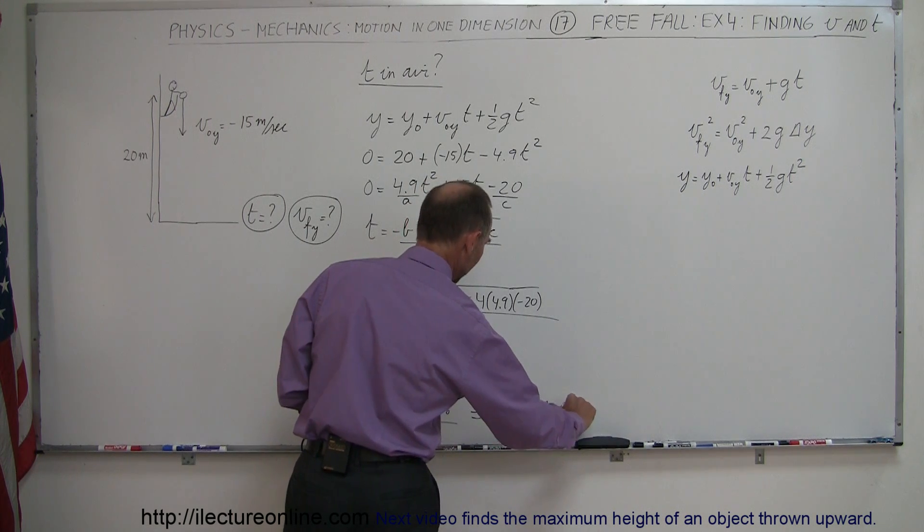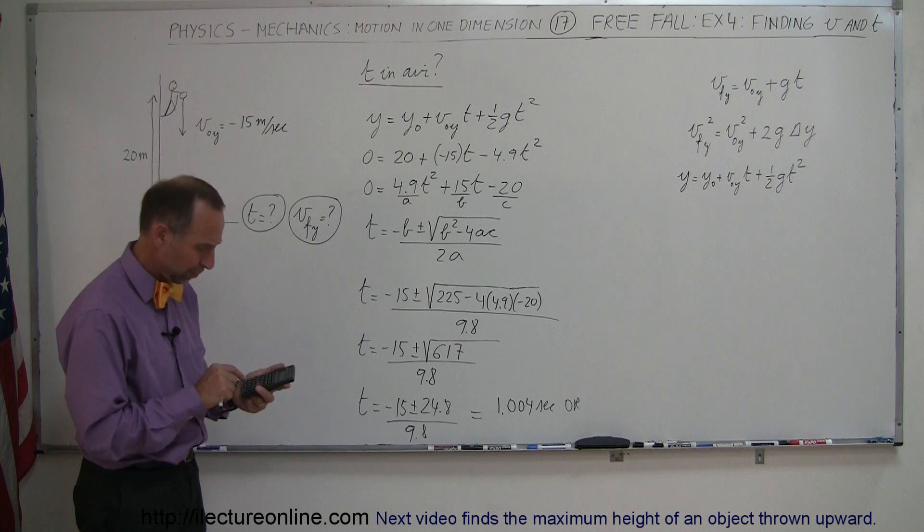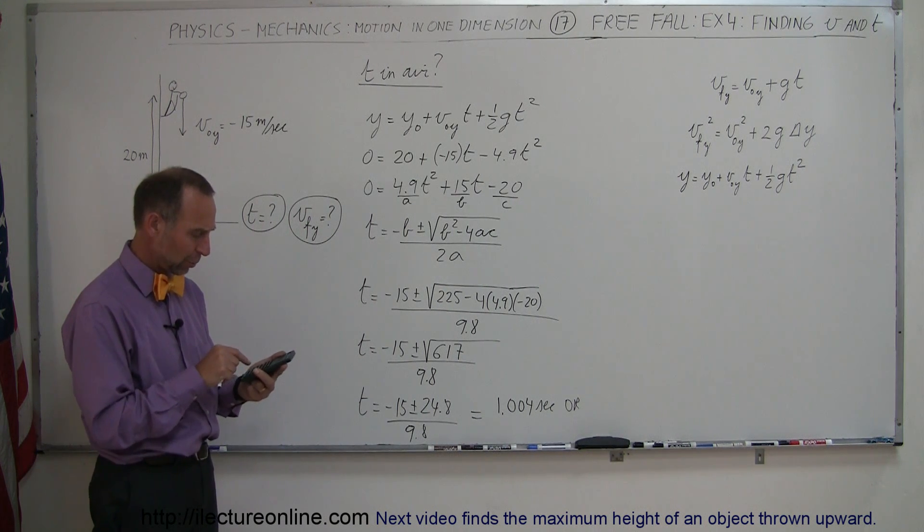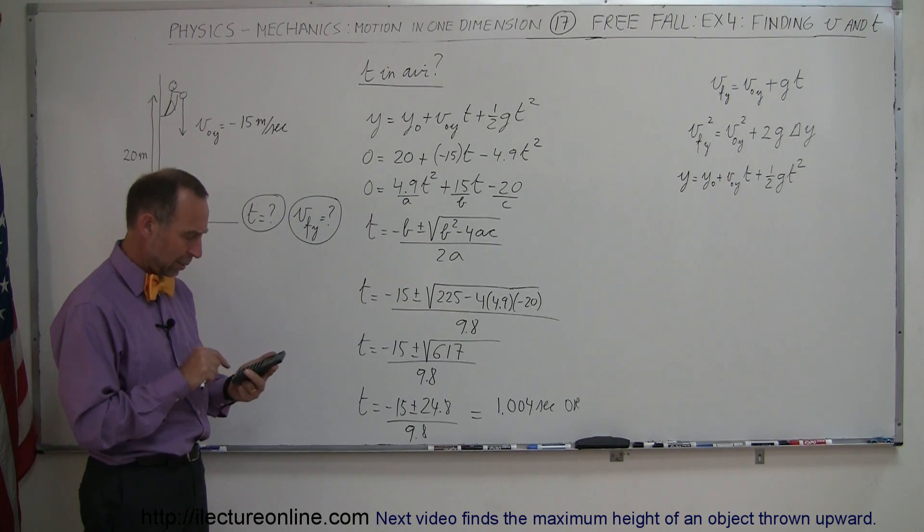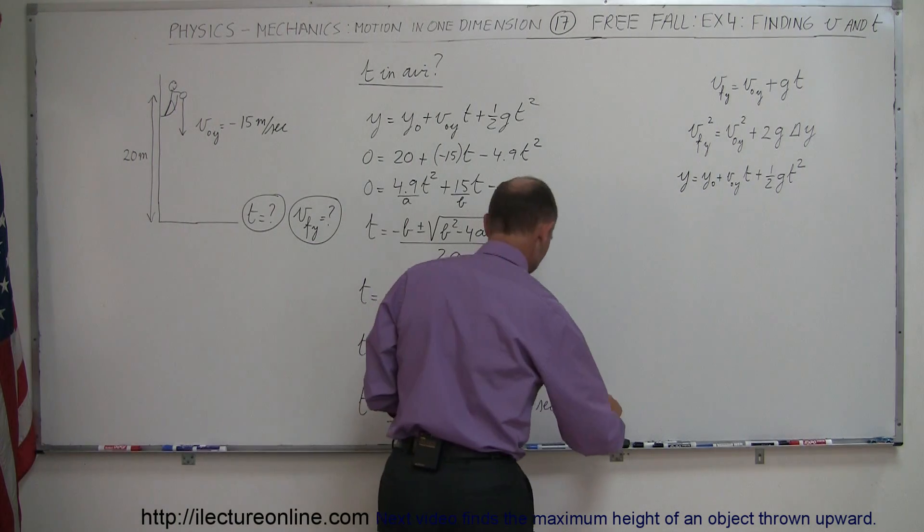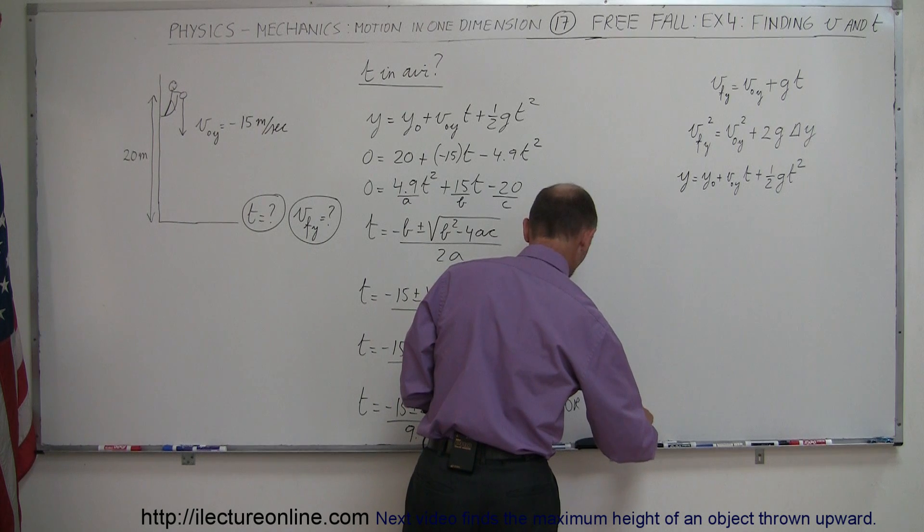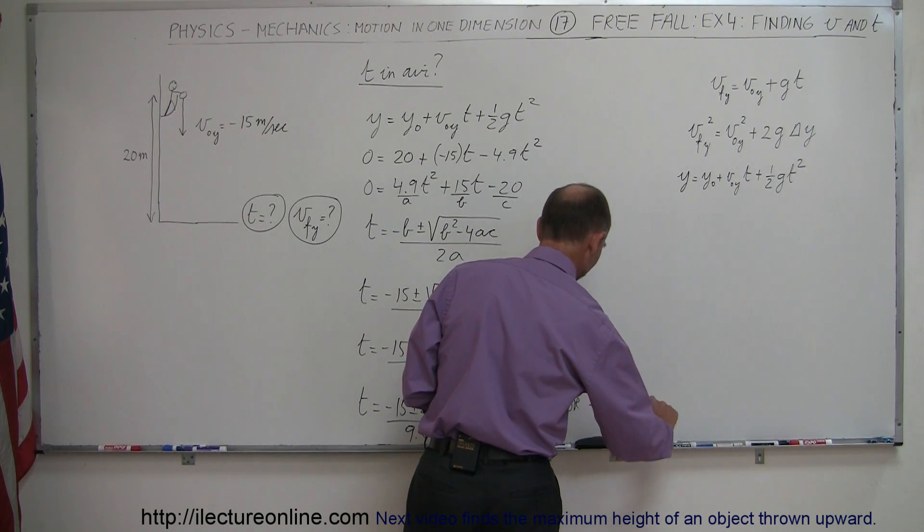or if we take the negative option, so we get 617, take the square root, make that negative, minus 15 divided by 9.8 equals, and it'll be or negative 4.065 seconds.